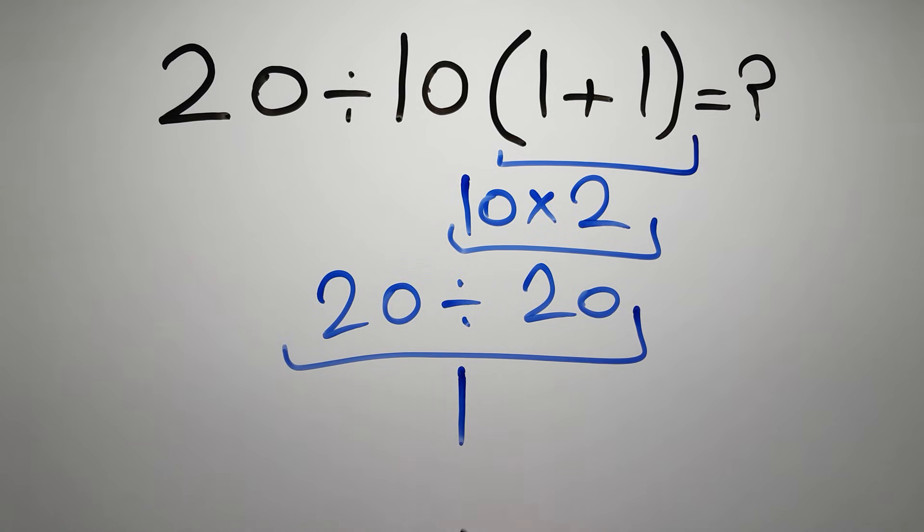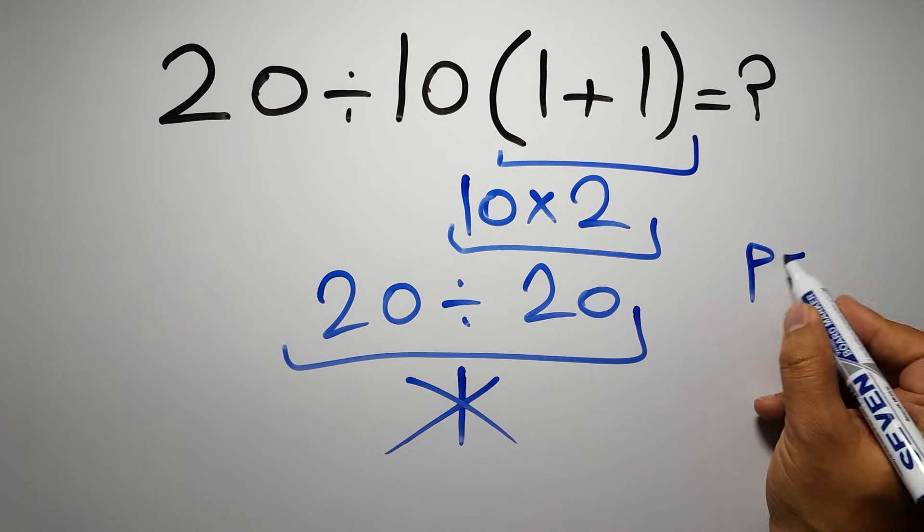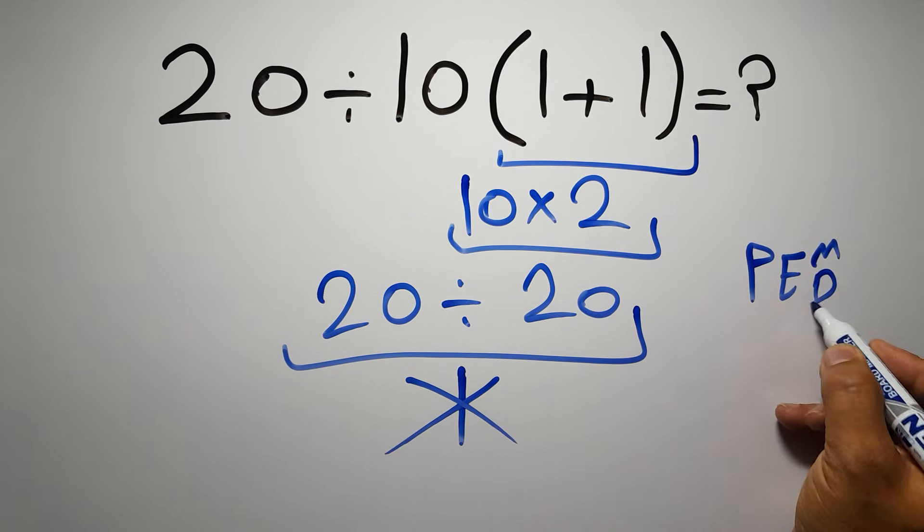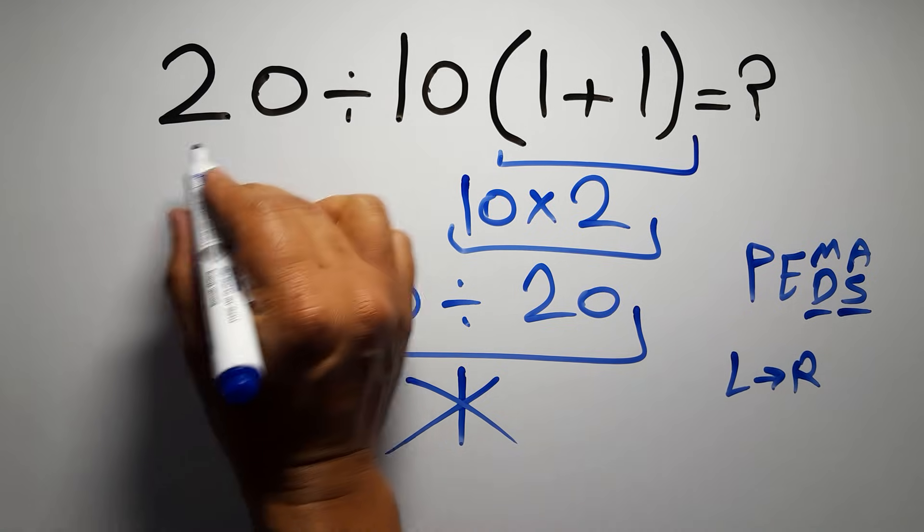But this answer is not correct because according to the order of operations, first we have to do parentheses, then exponents, then multiplication or division, and finally addition or subtraction. Remember that multiplication and division have equal priority and we have to work from left to right, and the same applies to addition and subtraction.